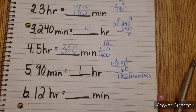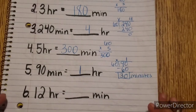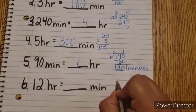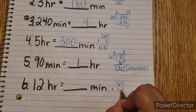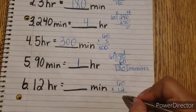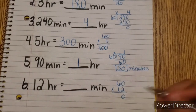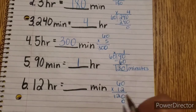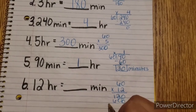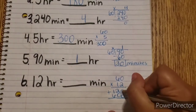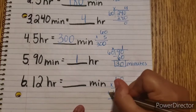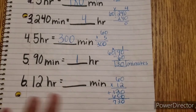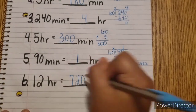Let's look at the last question: 12 hours equals how many minutes. Since 1 hour equals 60 minutes, we need to multiply 60 and 12. We have 60 times 12 — 2 times 0 is 0, 6 times 2 is 12. Next line, add a 0 — 0 times 1 is 0, 6 times 1 is 6. Now add: 0 plus 0 is 0, 2 plus 0 is 2, 1 plus 6 is 7. So 12 hours equals 720 minutes.